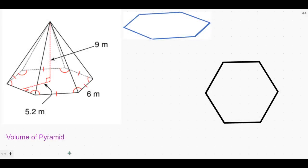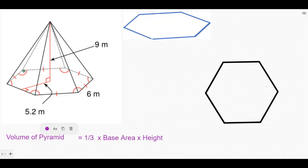In this video, we are going to find the volume of a pyramid. This is a pyramid whose base is a regular hexagon. The volume of a pyramid is one-third times base area times height. The base of this pyramid is a regular hexagon, and the height is 9 meters.